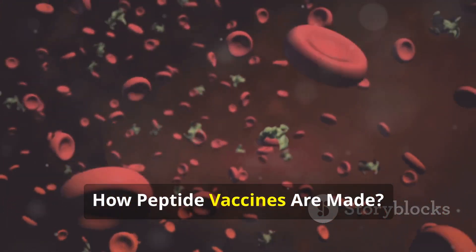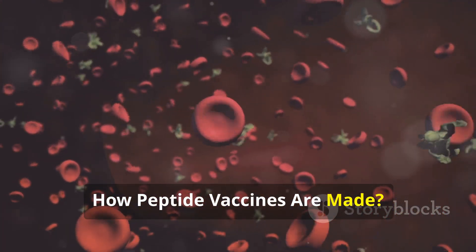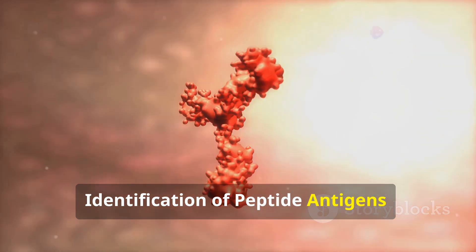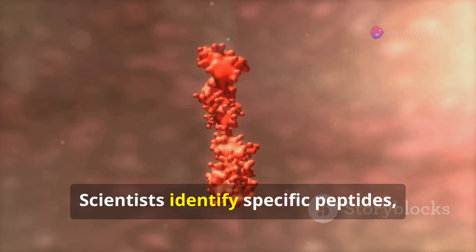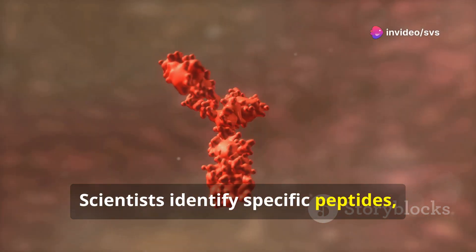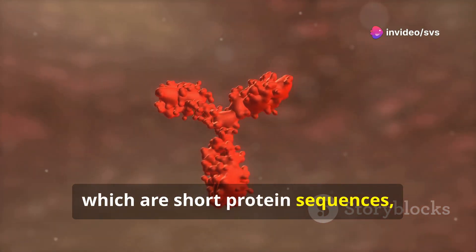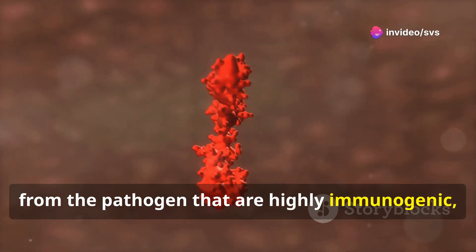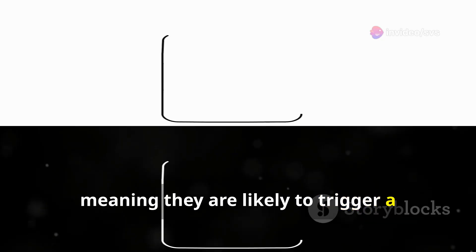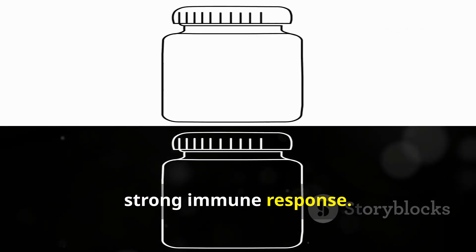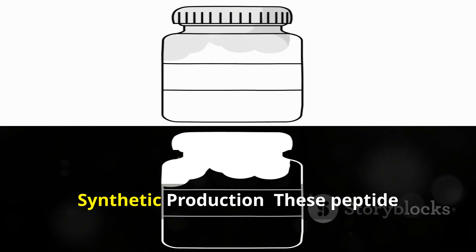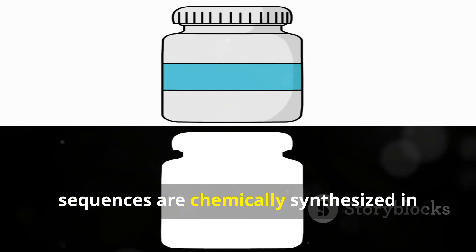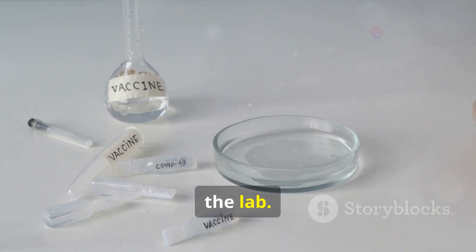How peptide vaccines are made. Step one: Identification of peptide antigens. Scientists identify specific peptides, which are short protein sequences, from the pathogen that are highly immunogenic, meaning they are likely to trigger a strong immune response. Step two: Synthetic production. These peptide sequences are chemically synthesized in the lab.